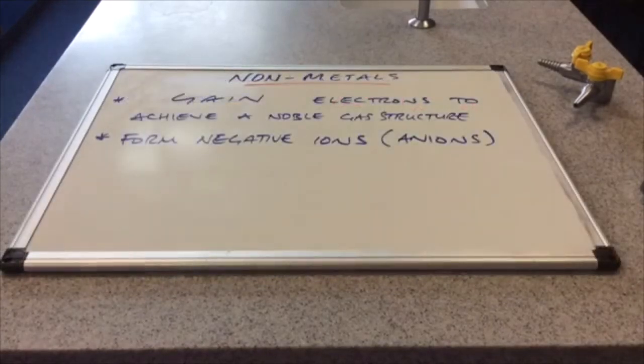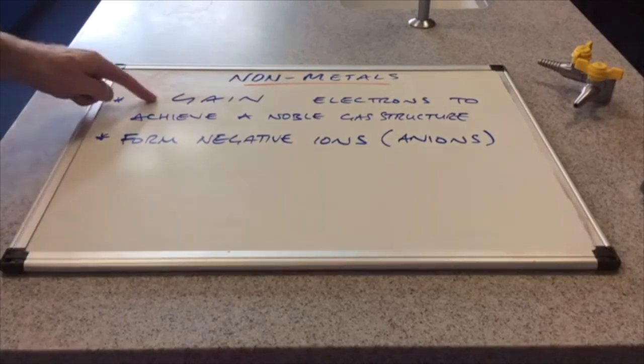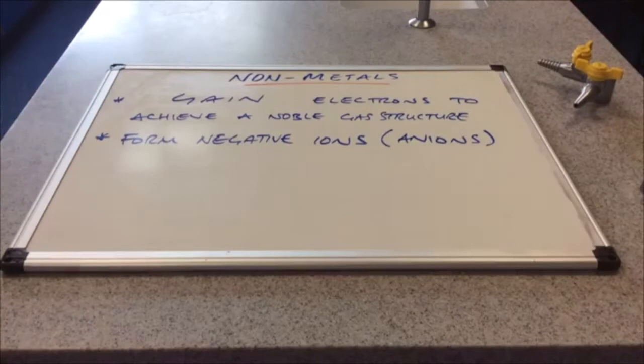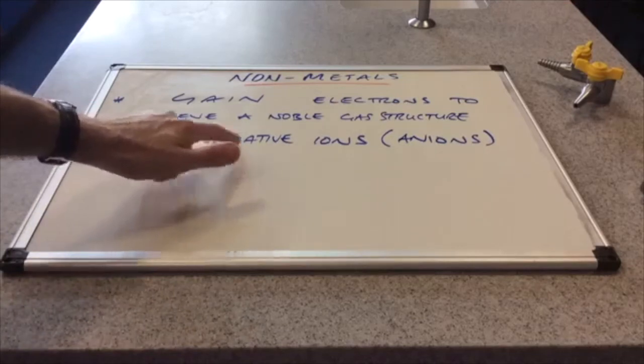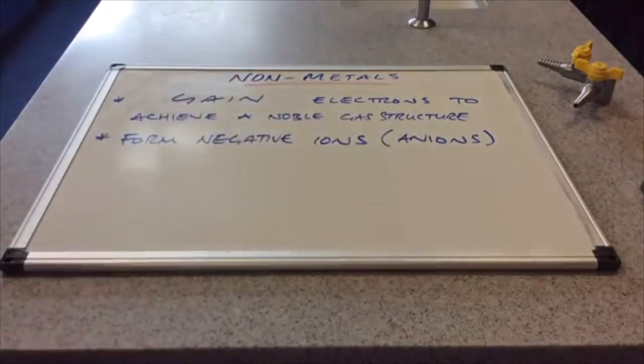If we look at non-metals now, you can see that they are doing the opposite to the metals. So they gain electrons to become stable to achieve that noble gas structure. And they form negatively charged ions. We call them anions.